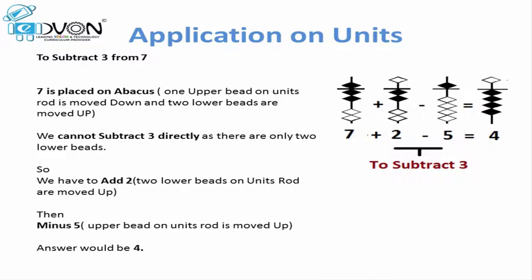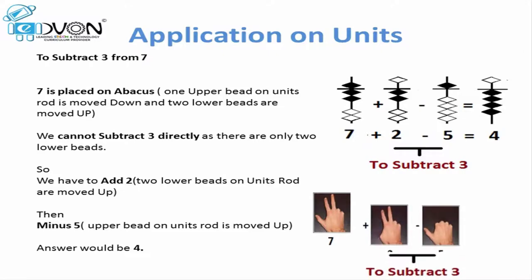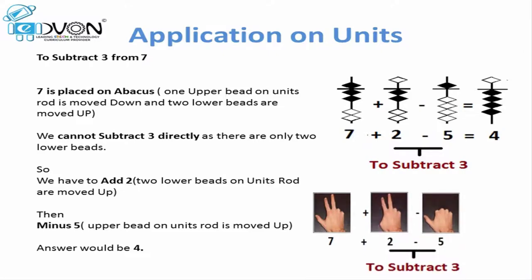Let's consider this same example on our fingers as well. If we want to subtract 3 from 7 on our fingers, first we place 7 on our right hand. Now to subtract 3 we only have 2 fingers and a thumb equal to 5, so we cannot directly subtract 3. We apply the formula: add 2 more fingers on the right hand and close the thumb. As a result we get 4 fingers on our right hand, which represents the value 4. So the answer is 4.